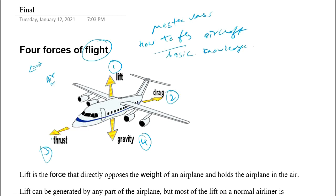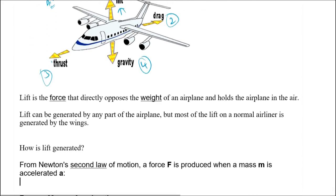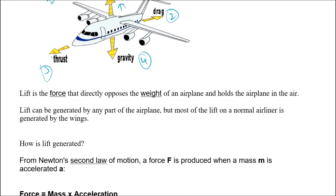In this video we will be discussing the force called lift. Lift on the aircraft acts in the upward direction. From the diagram it is clear that lift is a force that directly opposes the weight of the airplane — that is, it acts against gravity in the upward direction. Because of this lift, the aircraft is held in the air.